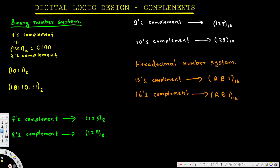The other method is to subtract from one-one-one-one. For example: one minus one equals zero, one minus one equals zero, one minus zero equals one, one minus one equals zero. So zero-one-zero-zero is going to be the one's complement of this number.